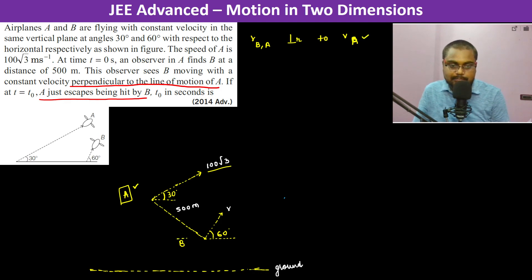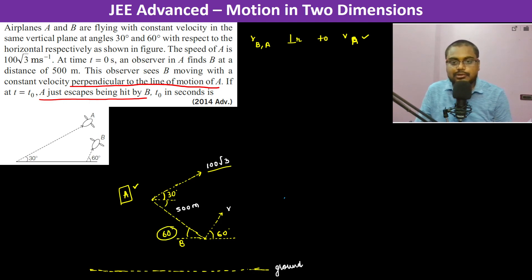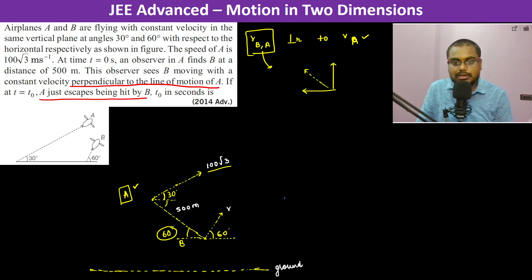So if this is 30 degrees, this is going to be 60 degrees, and therefore this is also going to be 60 degrees. So therefore, velocity of B with respect to A is going to be in such a manner where the net velocity is going to be at 60 degrees.